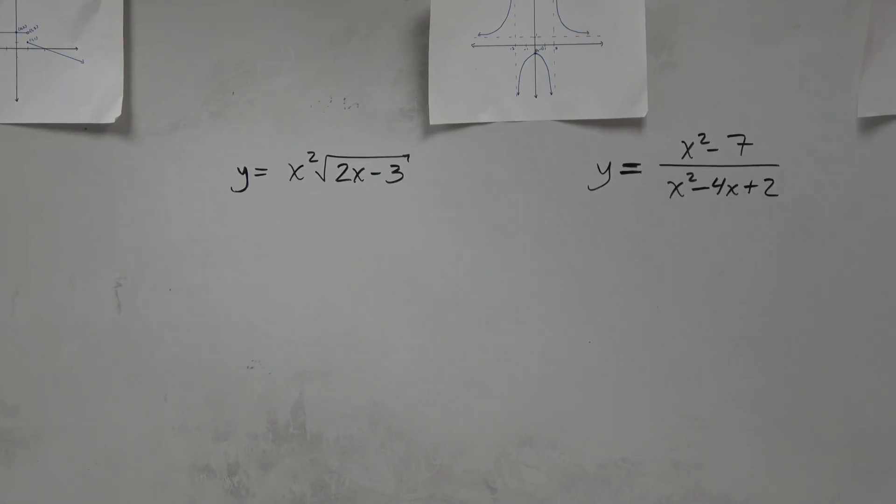In this first example, what you see is I have y equals x squared times square root of 2x minus 3.